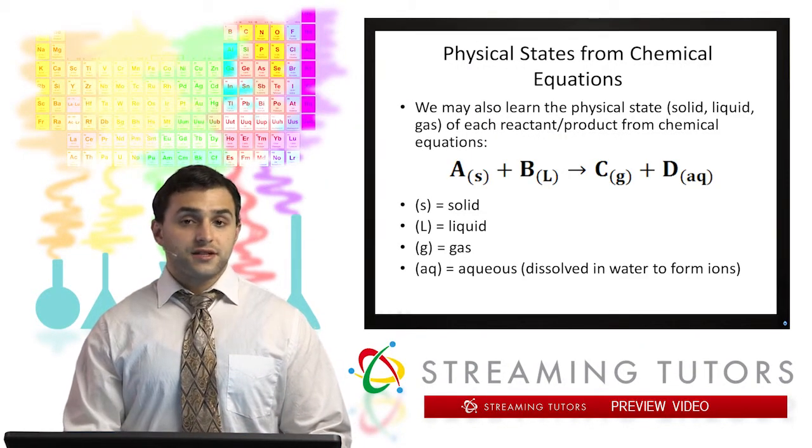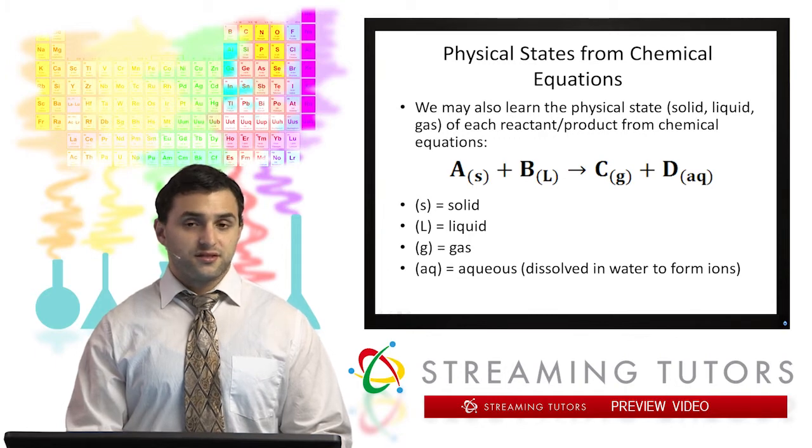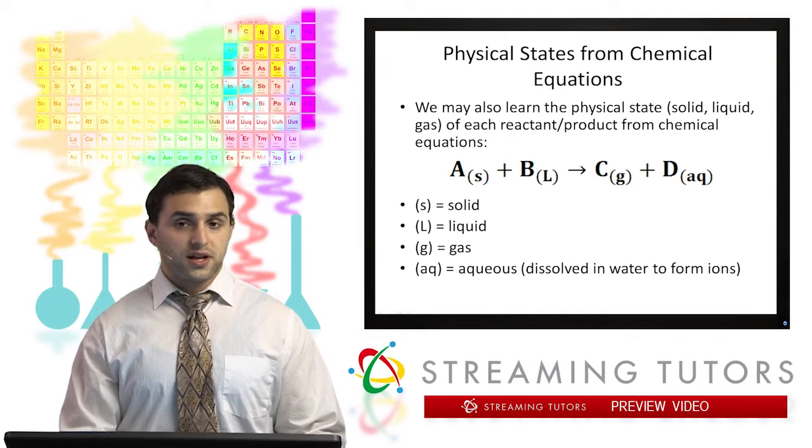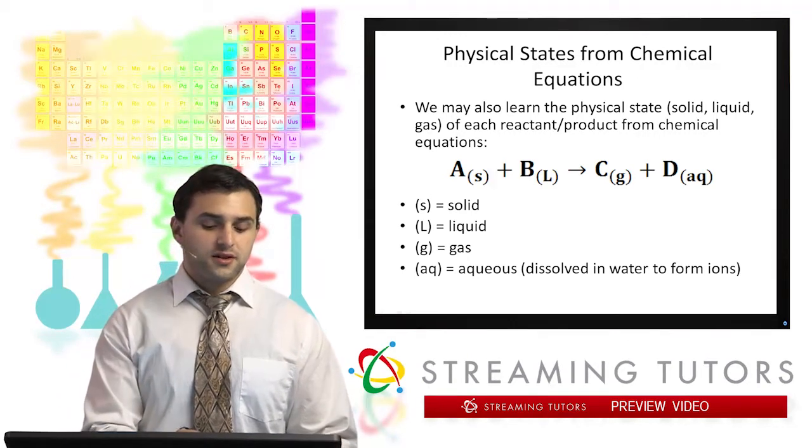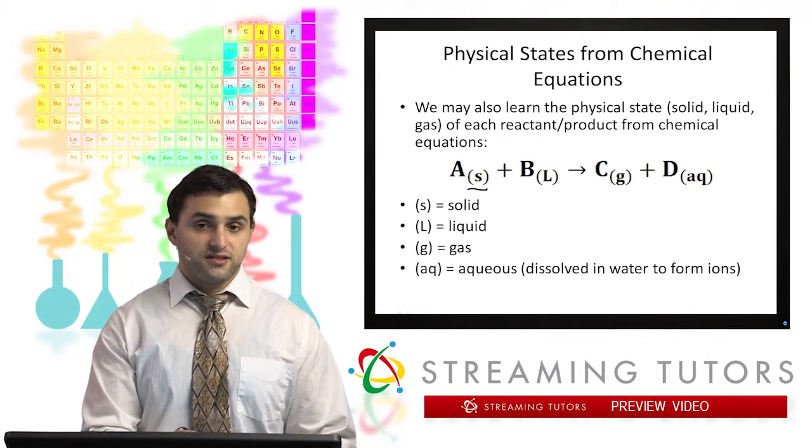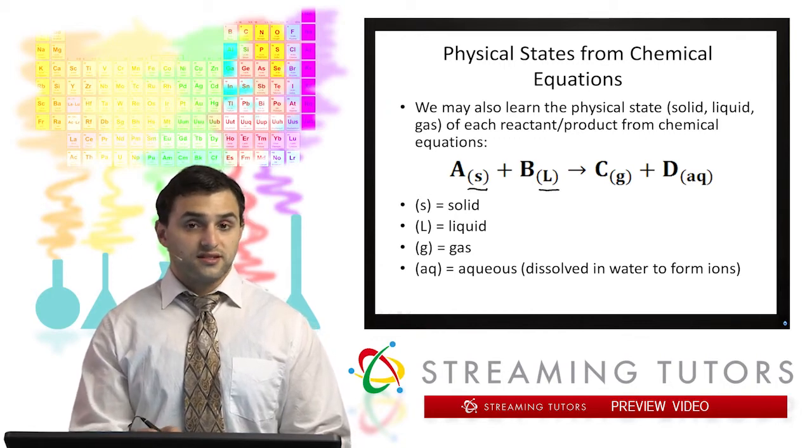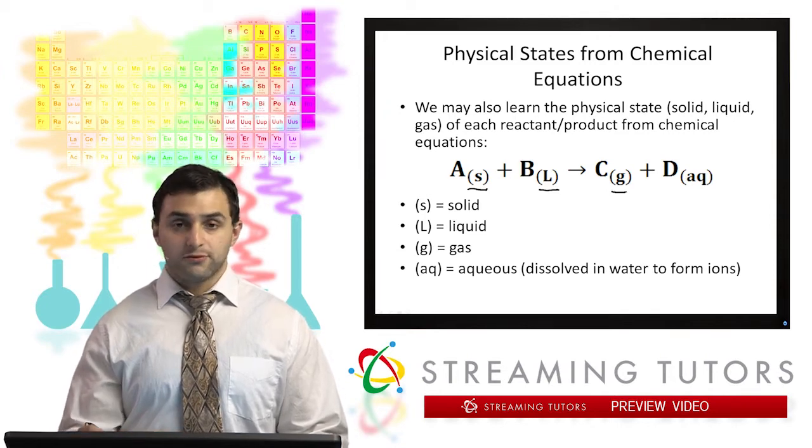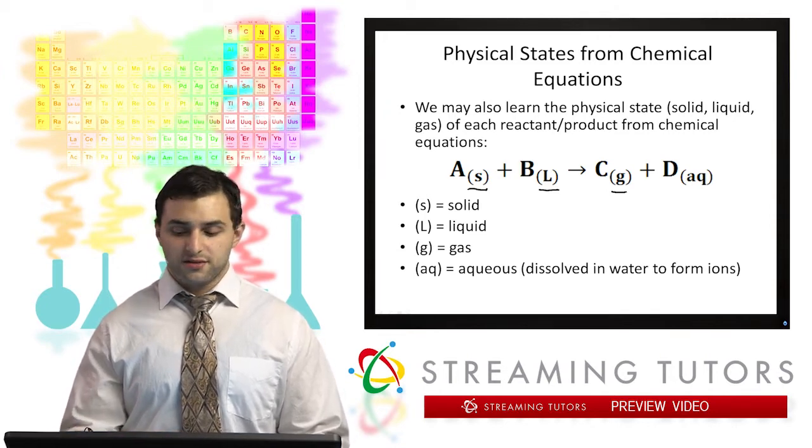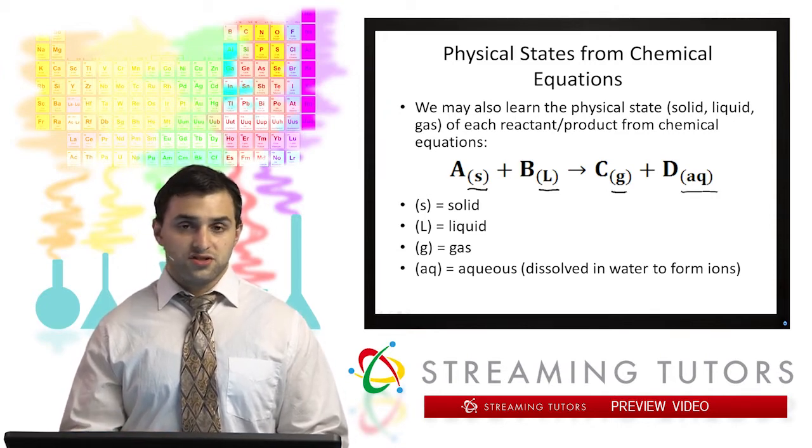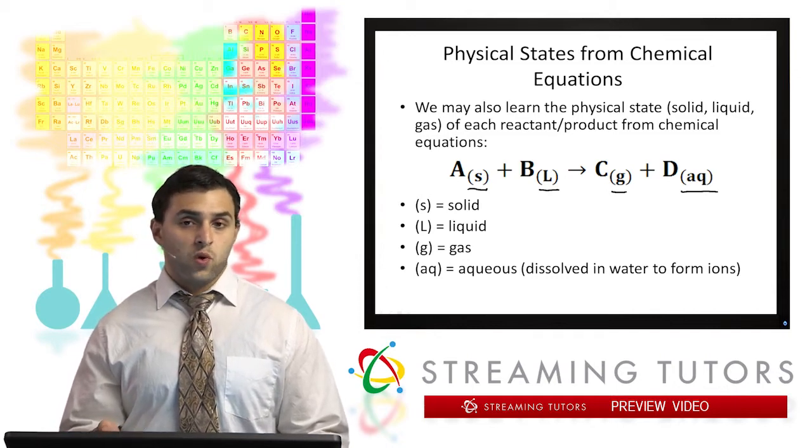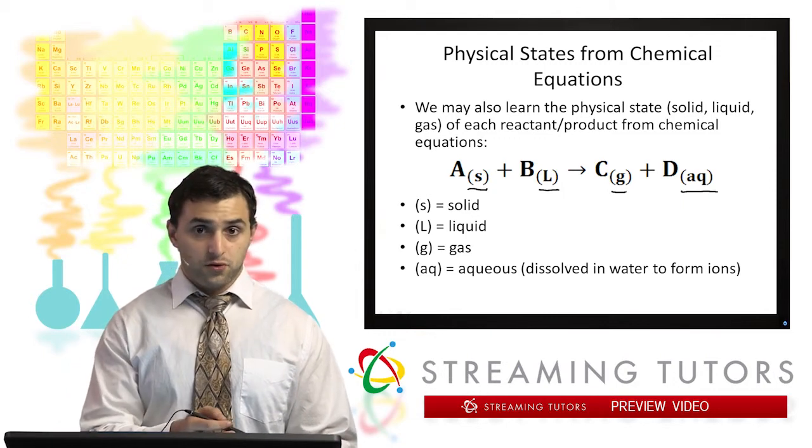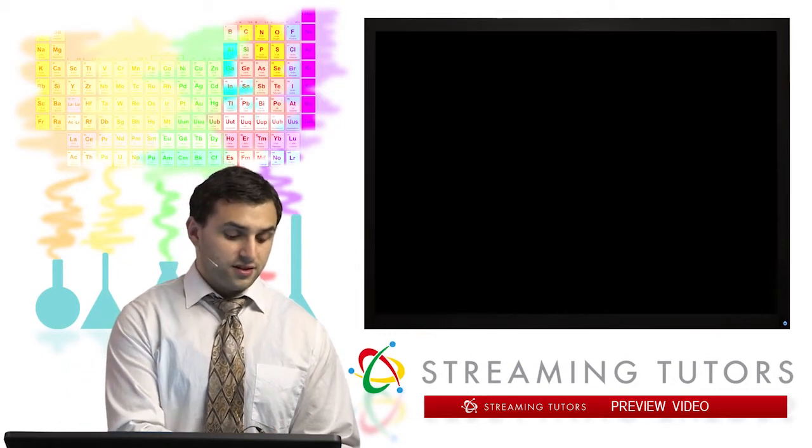We can also get physical states from chemical equations. Now what I mean by that is solid, liquid, gas, etc. So the notation we'll use for that is usually a subscript. So we have subscript S is a solid, subscript L is a liquid, subscript G is a gas, and what most of our reactions occur in is what's called aqueous solutions, AQ. And that just means dissolved in water. We'll get more into that next unit. But those are the four common ones that will be in our chemical equations.